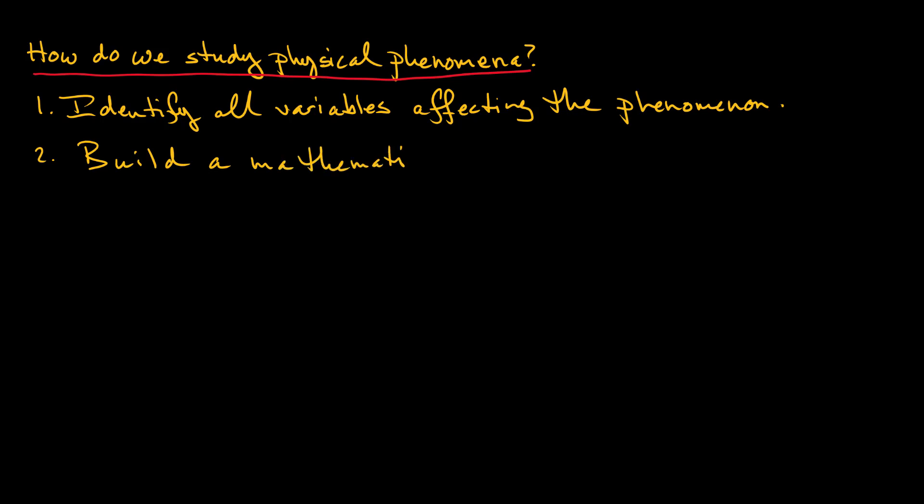Once all of the variables are identified we build our mathematical model. The mathematical model is what we would call an idealization of physical reality. Why is it an idealization? Well, we often make assumptions in science and engineering. Oftentimes the assumptions or approximations help simplify our models.